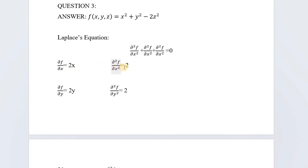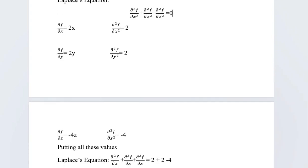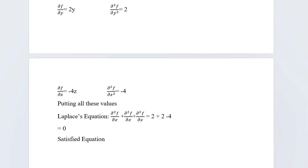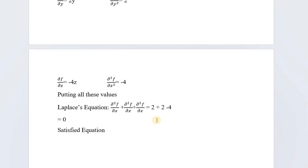Now for the second derivatives: since 2x has a constant and variable, the constant stays outside and the derivative of x with respect to x is 1, giving ∂²f/∂x² = 2. Similarly, ∂²f/∂y² = 2, and ∂²f/∂z² = −4. Substituting: 2 + 2 − 4 = 0. The Laplace equation is satisfied!